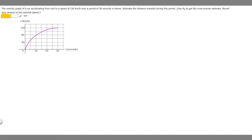In this problem we're told that the velocity graph of a car accelerating from rest to a speed of 120 kilometers per hour over a period of 30 seconds is shown. Estimate the distance traveled during this period. It says to use m of six to get the most precise estimate. Round your answer to two decimal places.